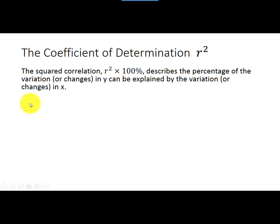Another concept we can take away from linear regression is we're going to use our correlation coefficient again. We've used it once before to talk about the strength of the linear relationship between our explanatory variable and our response variable. But if we square r, we can get a little more information about what's going on. So it says here the squared correlation, r², and if I multiply that by 100%, this will describe the percentage of the variation in y that can be explained by the variation in x.